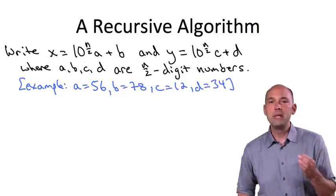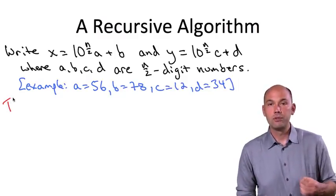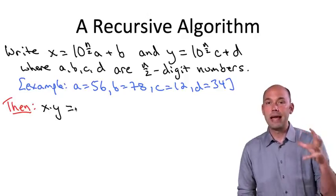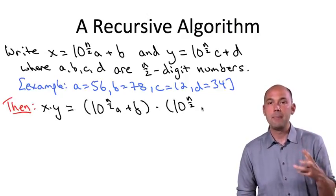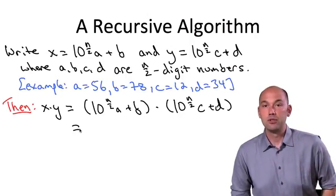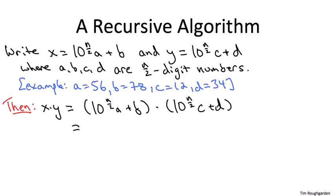What I want to do next is illuminate the relevant recursive calls. To do that, let's look at the product x times y, express it in terms of these smaller numbers a, b, c, and d, and do an elementary computation. Multiplying the expanded versions of x and y, we get an expression with three terms.